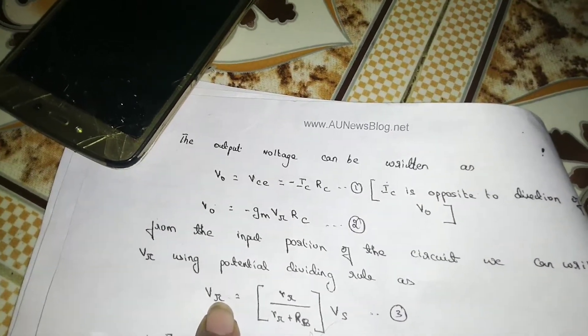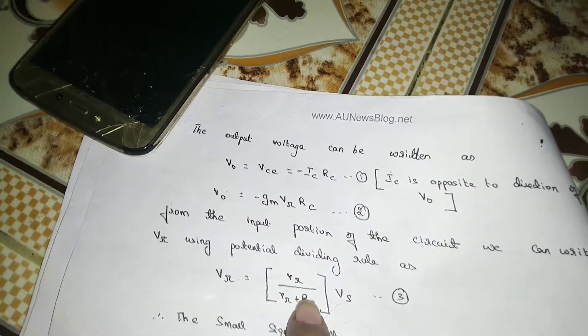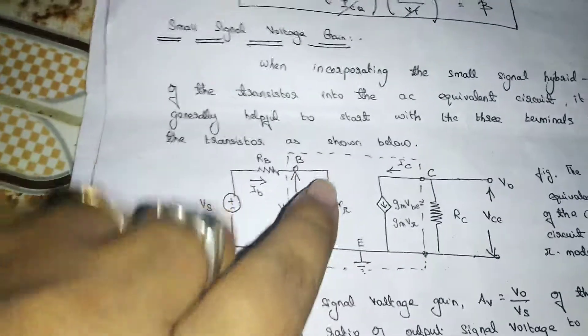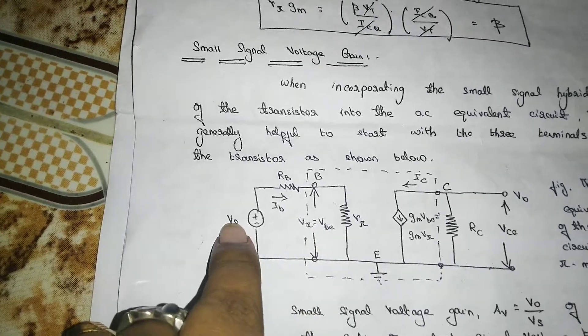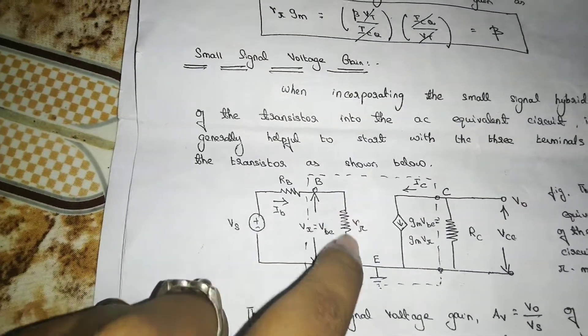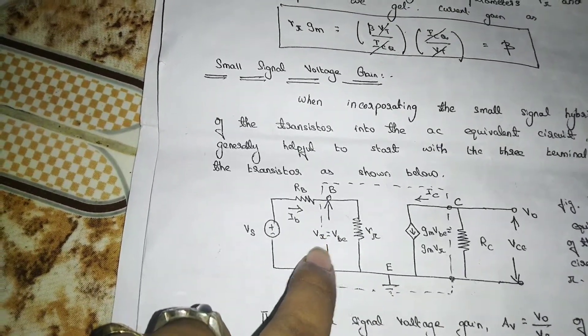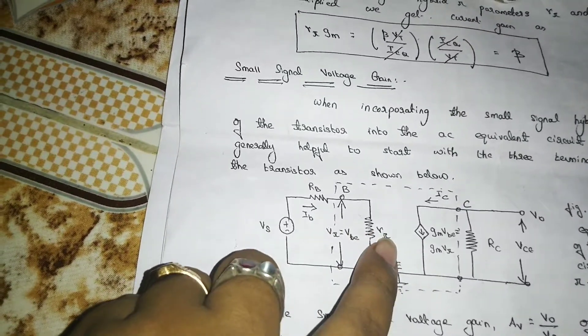Now, let's look at Vpi using the voltage divider rule. What is the voltage divider rule? Total voltage into same resistance divided by total resistance. So, Vpi is equal to total voltage Vs into Rpi divided by total resistance.